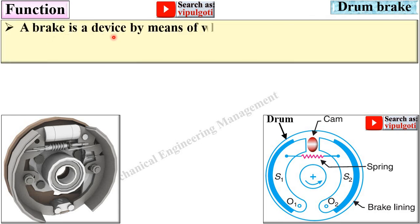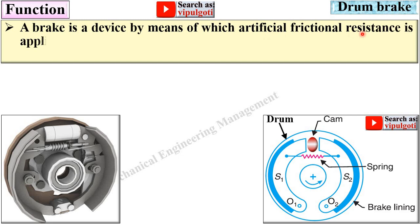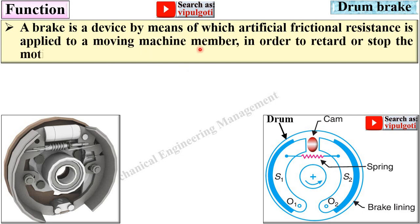A brake is a device by means of which artificial frictional resistance is applied to a moving machine member in order to retard or stop the motion of a machine. This is a very simple function of the brake.